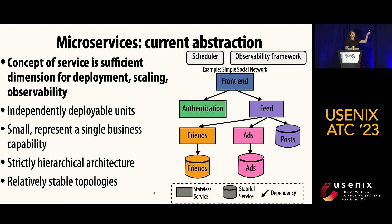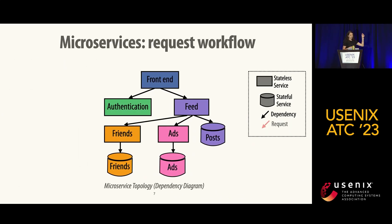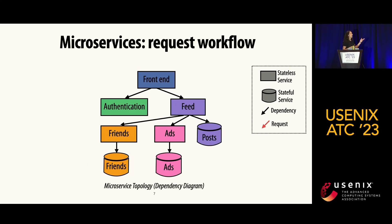I've added a scheduler and an observability framework built on top of our microservice architecture, and they operate on the granularity of a service. For example, if we want to scale a component, we deploy many instances of that same executable — here I've scaled out the entire feed executable. This diagram is typically called a dependency diagram.